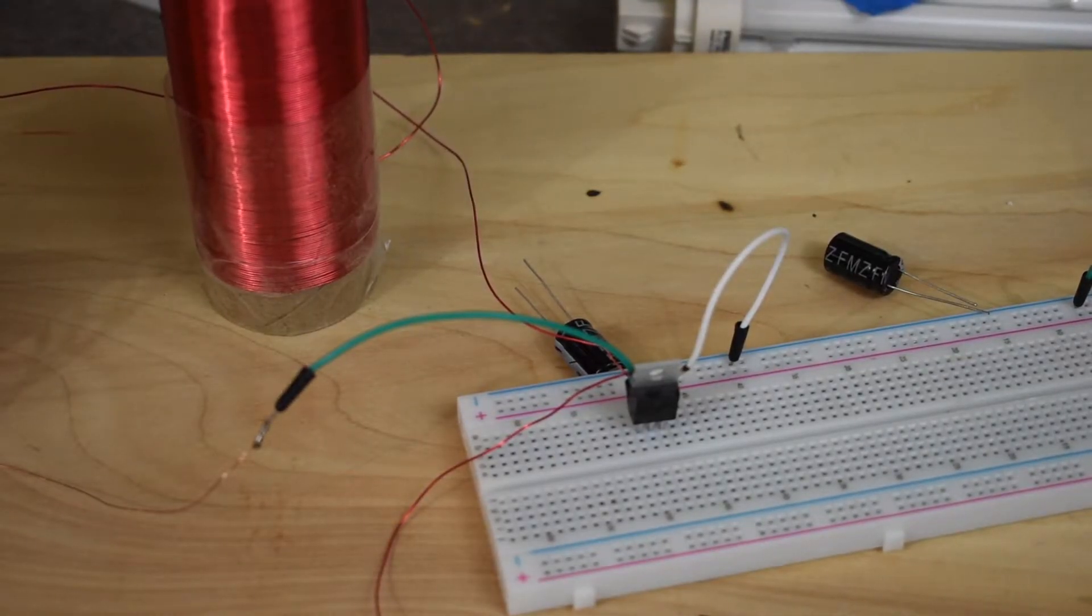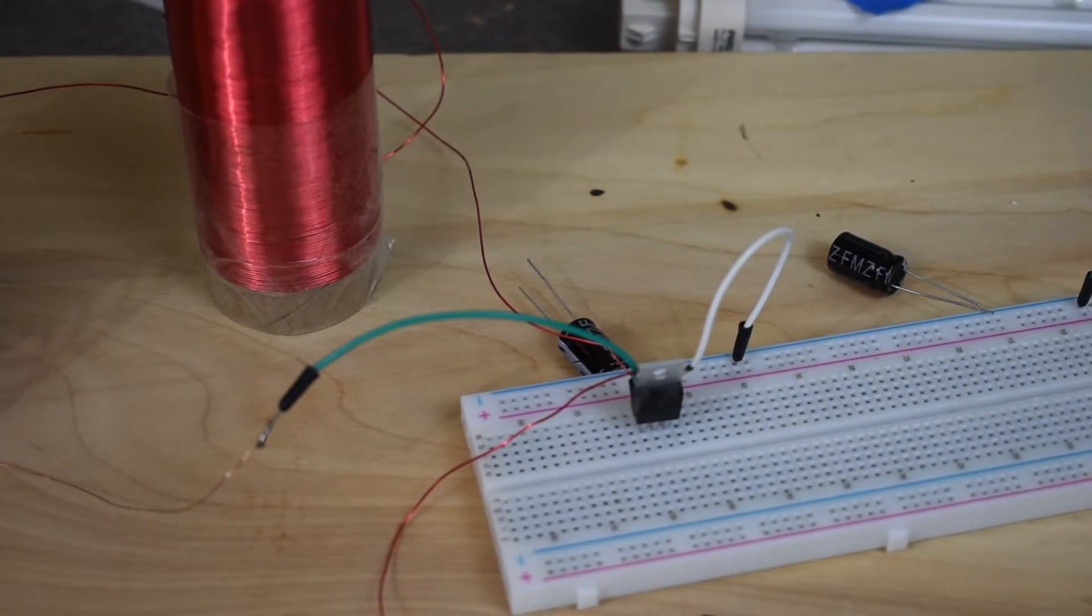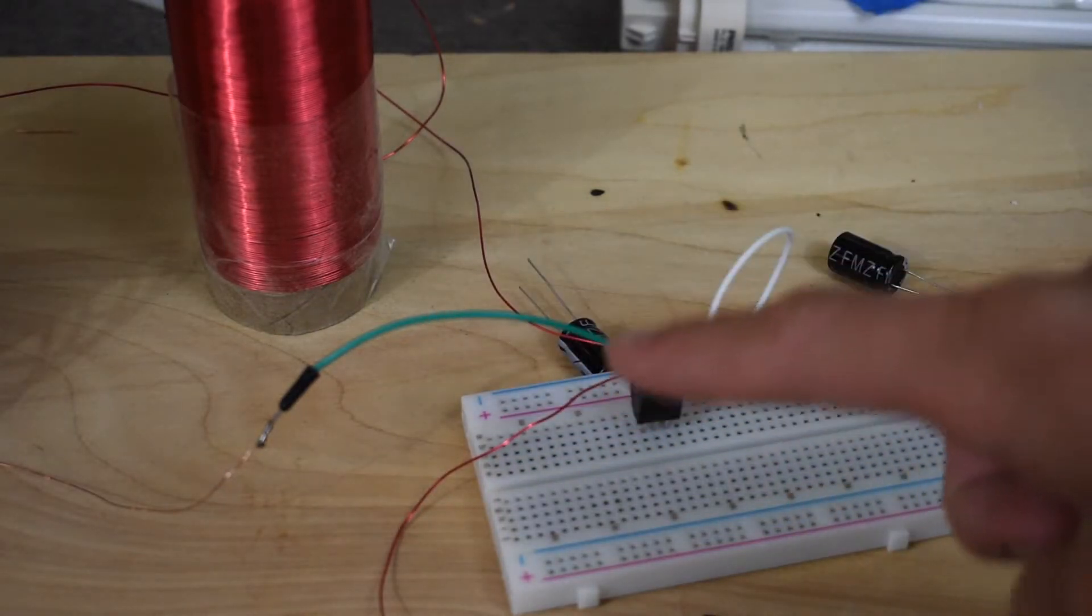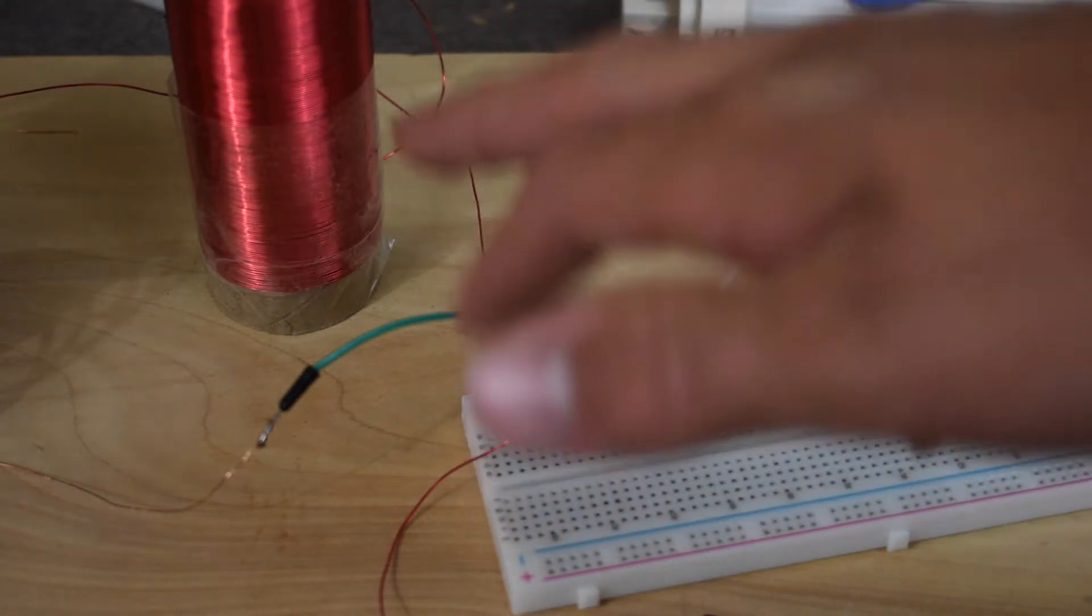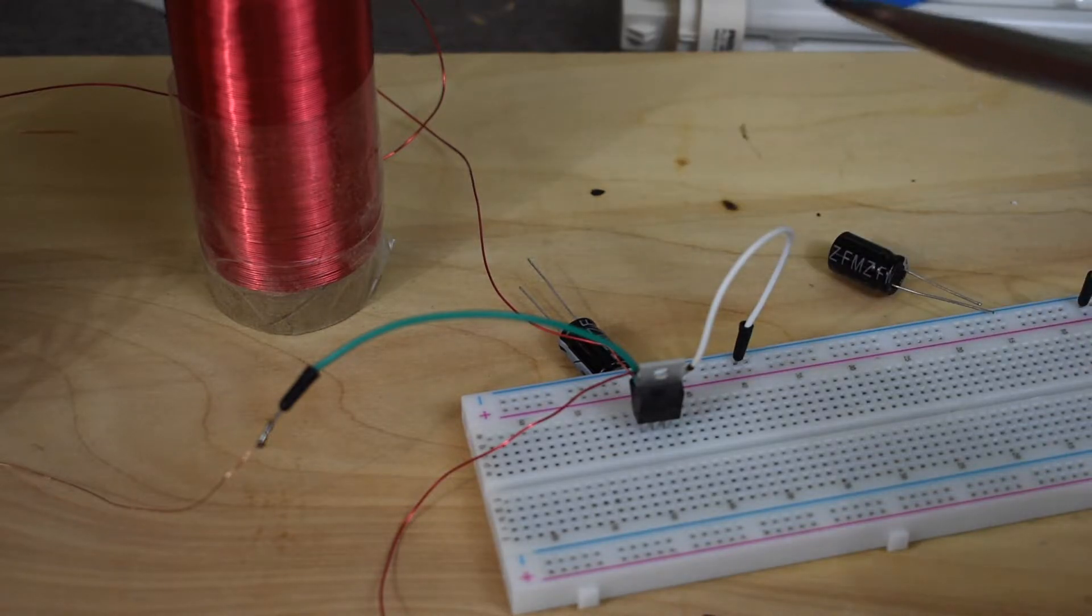Now down over here we have one of our TIP-31C transistors over here. Now transistors are vital to building a Tesla coil because Tesla coils run off of alternating current. Now the thing that doesn't make sense is we're going to be feeding this anywhere between 12 and 24 volts of DC. Now what this transistor is doing is it's oscillating back and forth like this, making a square wave signal to the primary coil of the Tesla coil. Now when current flows through the primary coil, it creates a magnetic field around the primary coil itself and the secondary coil. Now when the transistor switches off, that magnetic field collapses and it basically pushes a very high voltage through the secondary coil.